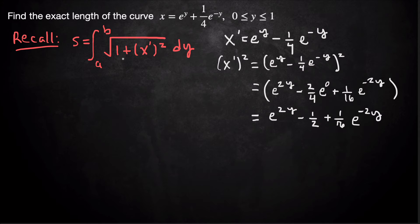And now, under the radical, we actually have 1 + (x')². So let's add 1 to this term. Well, if I add 1, the only thing that really changes is -1/2. -1/2 + 1 is +1/2. So that will become e^(2y) + 1/2 + 1/16 e^(-2y).